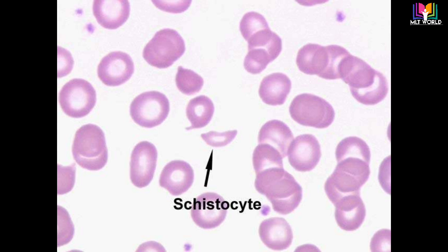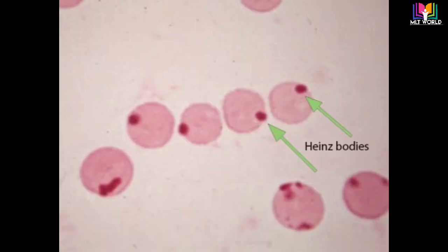What is the cause of schistocytes? Schistocyte formation occurs as a result of mechanical destruction, or fragmentation hemolysis, of normal red blood cells. This occurs when there is damage to the blood vessel and clots begin to form, and the formation of fibrin strands in the vessel occurs as part of the clot formation process.